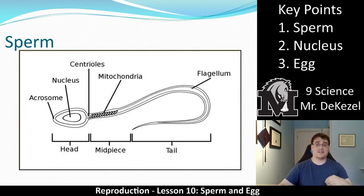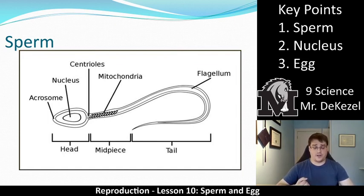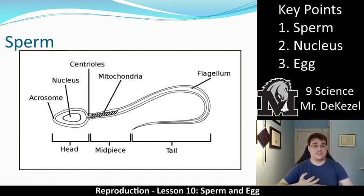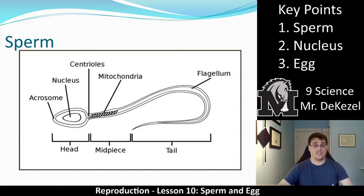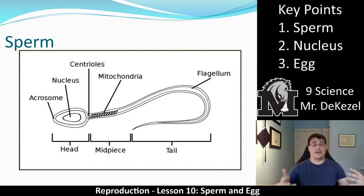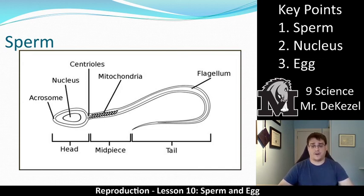Each piece has a very important function. The mitochondria produce energy. The centrioles use that energy to move the flagellum, which is essentially the tail. The sperm needs to move in order to bring the nucleus — the DNA — towards the egg. Once it reaches the egg, the acrosome allows it to blast through and get inside. Each portion has a very specific function.